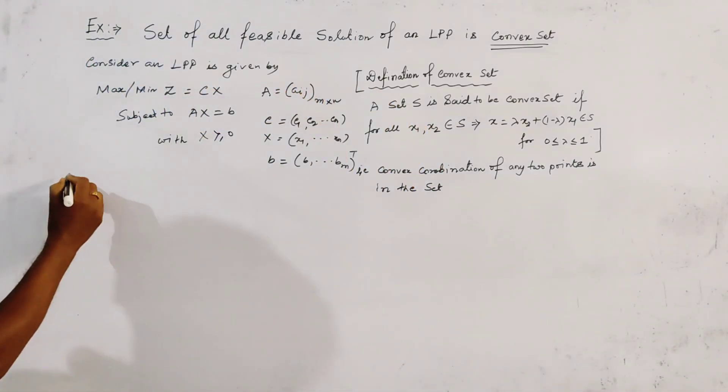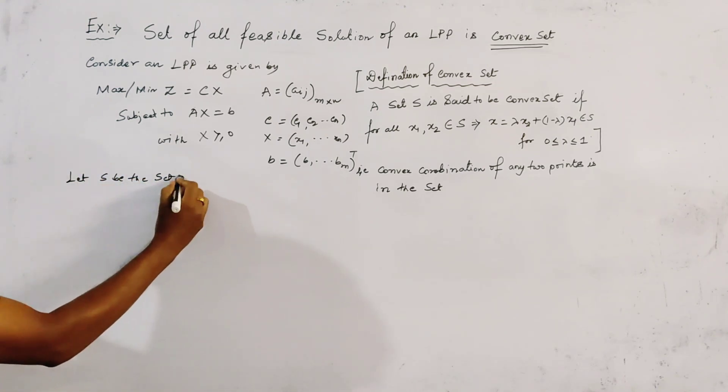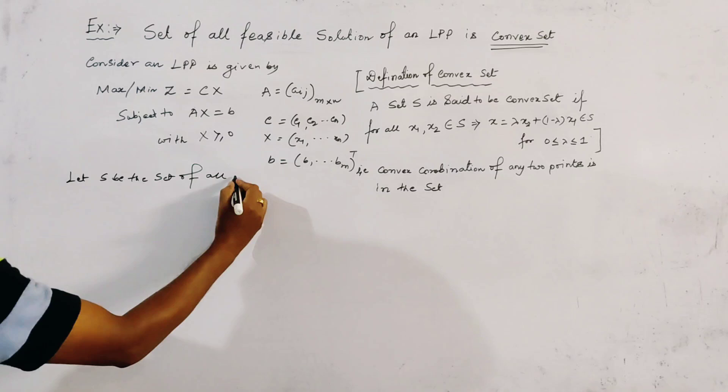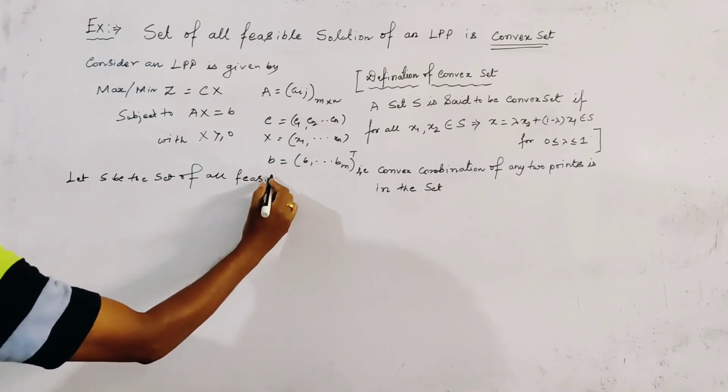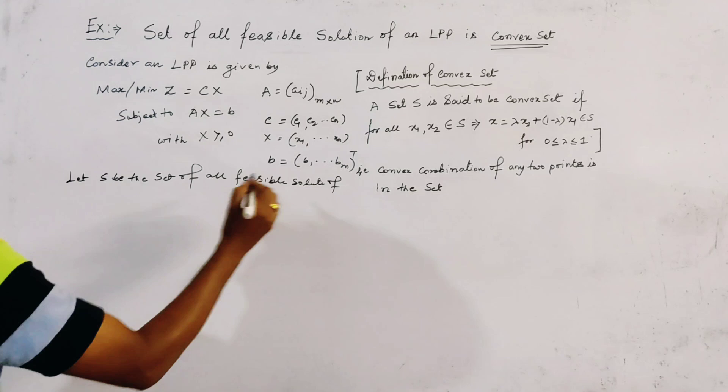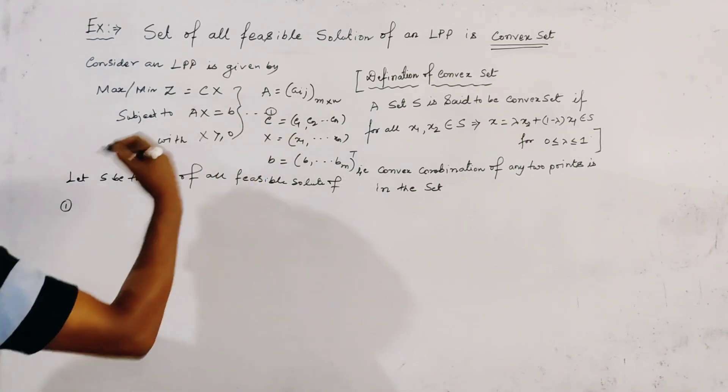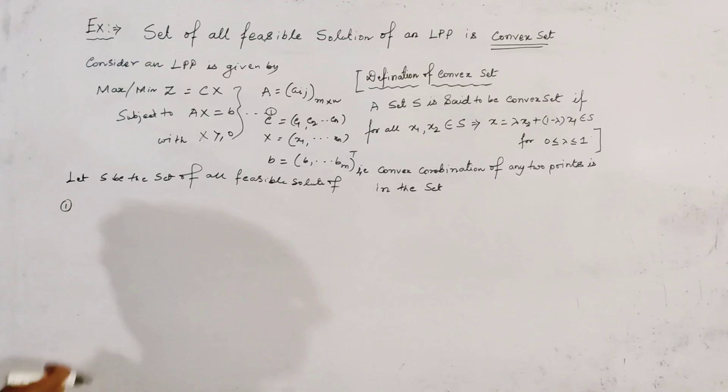Now, let S be the set of all feasible solutions of 1. Let it be P1. And what do you mean by feasible solution?